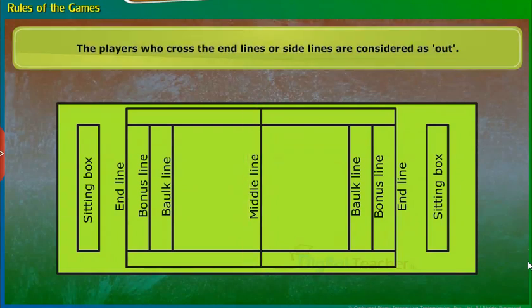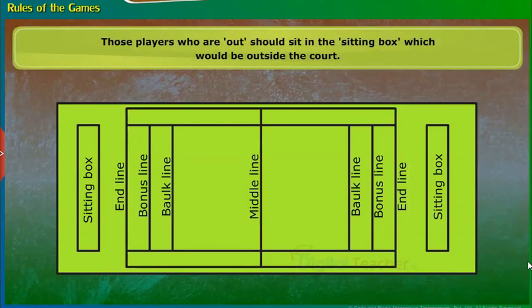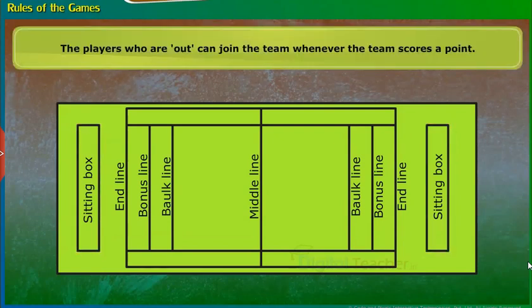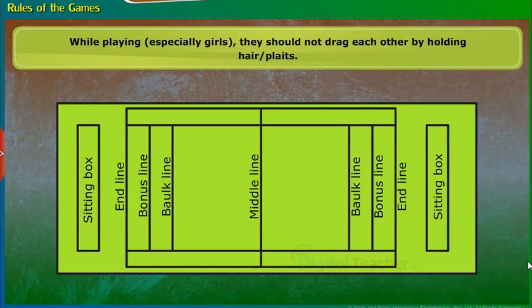The players who cross the end lines or side lines are considered as out. Those players who are out should sit in the sitting box which would be outside the court. The players who are out can join the team whenever the team scores a point. The players should not grow nails. One should not apply oil to the body while playing. While playing, especially girls, they should not drag each other by holding hair or plaits.